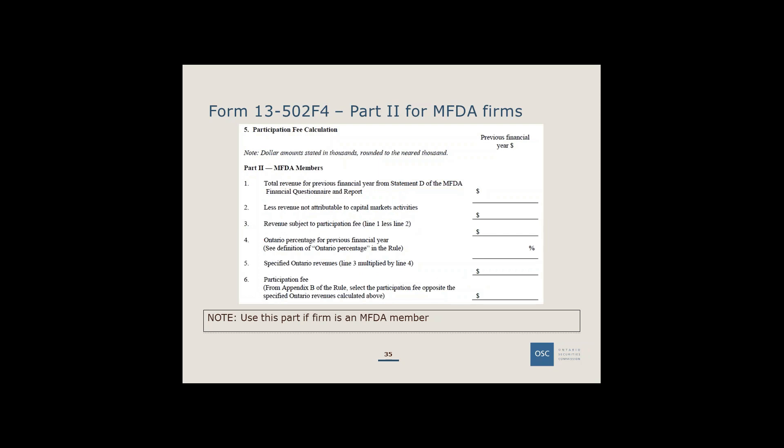Similarly, for MFDA members, the participation fee calculation is based on your MFDA Form 1 or Statement D of the financial questionnaire and report. You report total revenues, back out any revenues not considered capital markets activities, and apply an Ontario percentage to arrive at Ontario revenues subject to participation fees. This form is only for MFDA members.